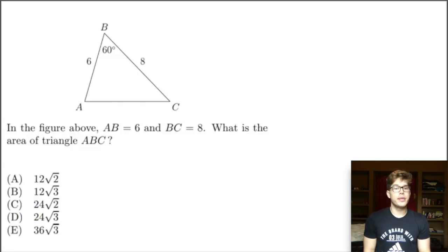Clear our board. In the figure above, AB equals 6 and BC equals 8. What is the area of this triangle? Okay, so how do we find the area of a triangle? Area of a triangle is simply base times height divided by 2. And so let's drop, so we can either use 6 or 8 as our base. We have this nice 60 degrees here, so let's drop a perpendicular line.